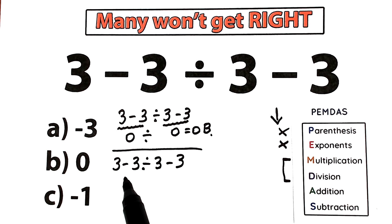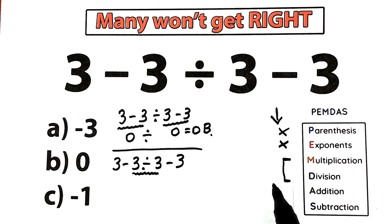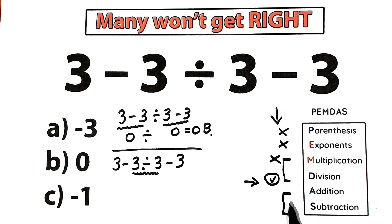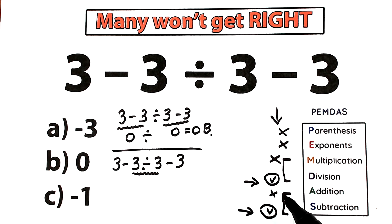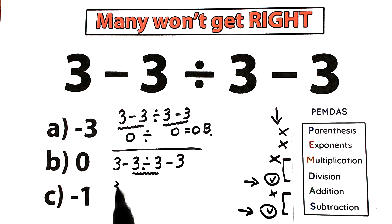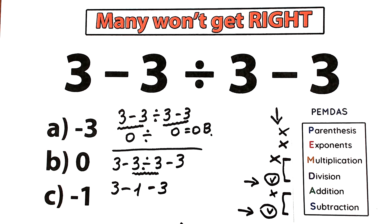Looking at the expression: right here we have subtraction, we're not interested in that yet; right here we have division, so we are interested in this. As you can see, we have a division part — division is always before subtraction, so we need to divide first and then subtract. So we have 3 minus, then 3 divided by 3 equals 1, giving us 3 minus 1 minus 3. That's the last step — subtraction: 3 minus 1 equals 2, and 2 minus 3 equals negative 1.